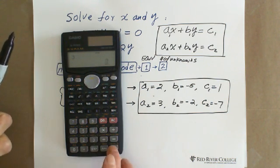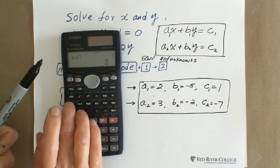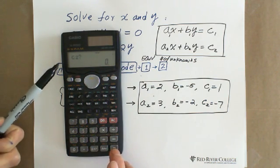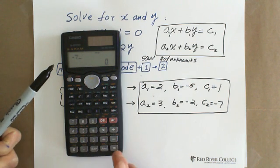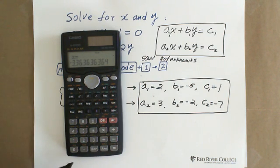Then A2, 3, enter. B2, negative 2, enter. C2, negative 7, enter. You just got the answer.